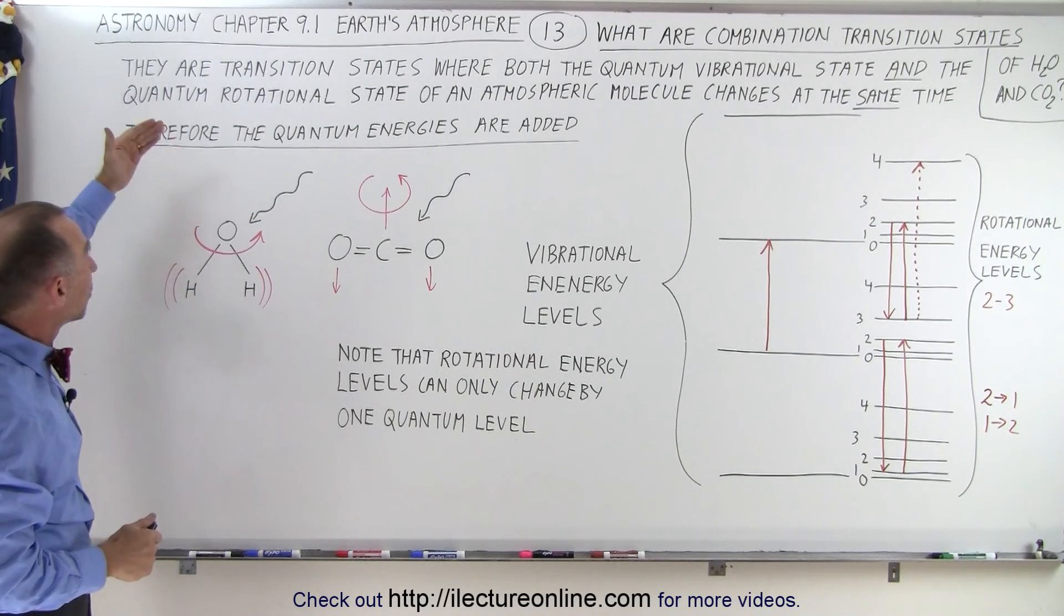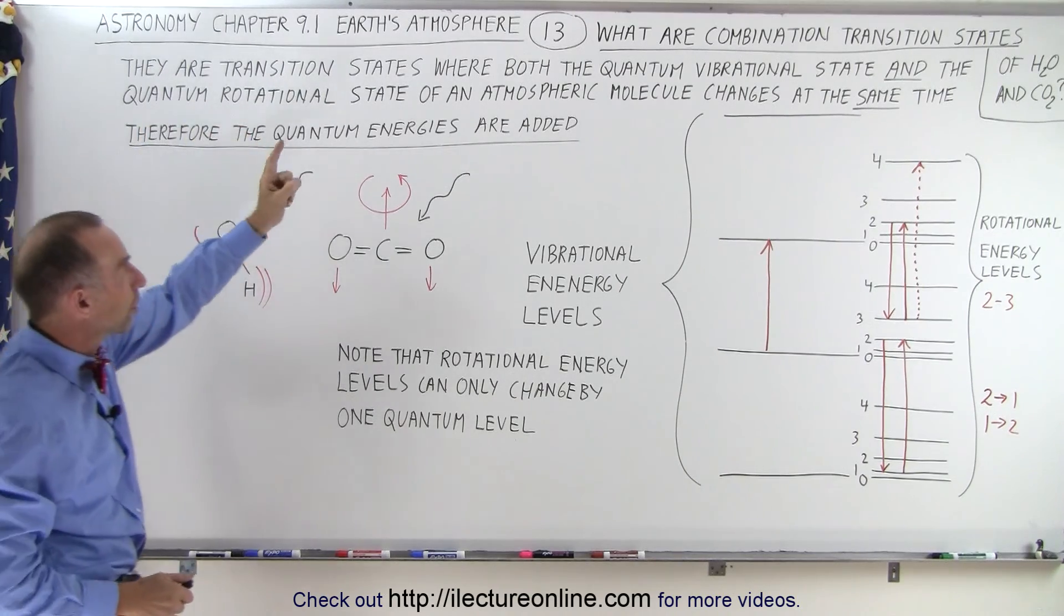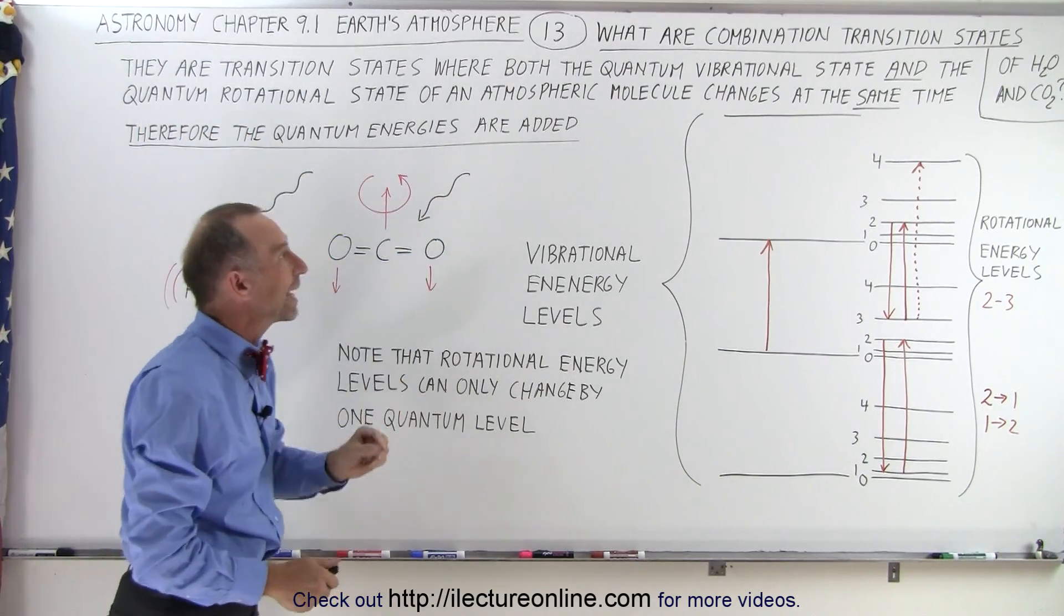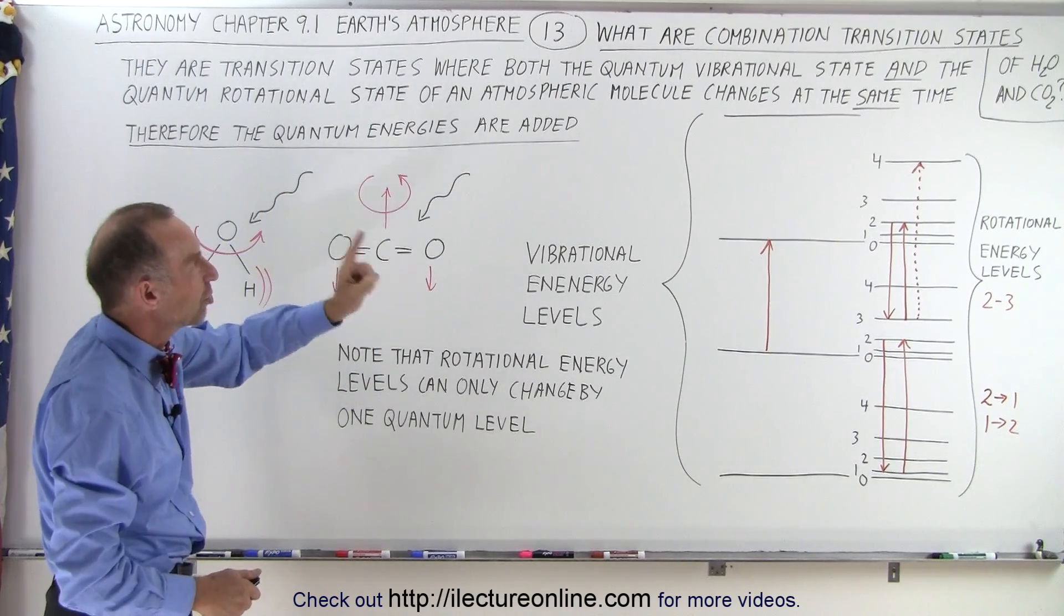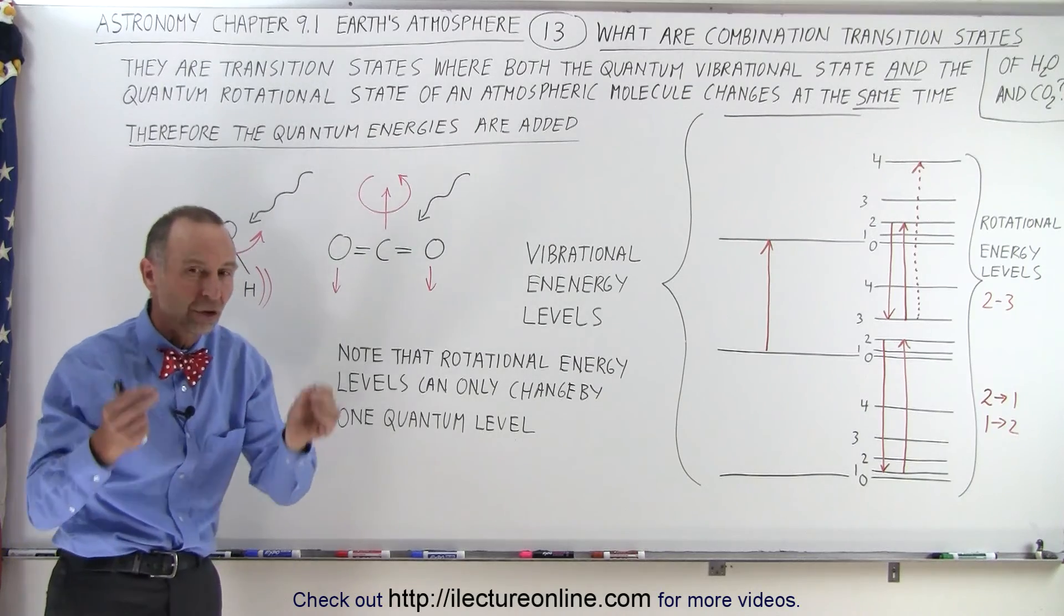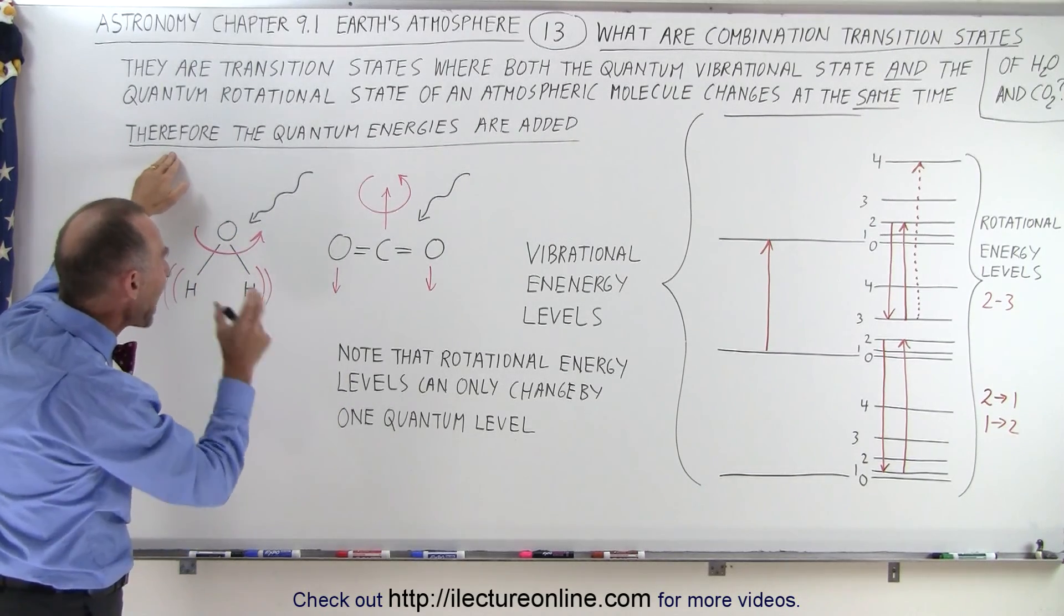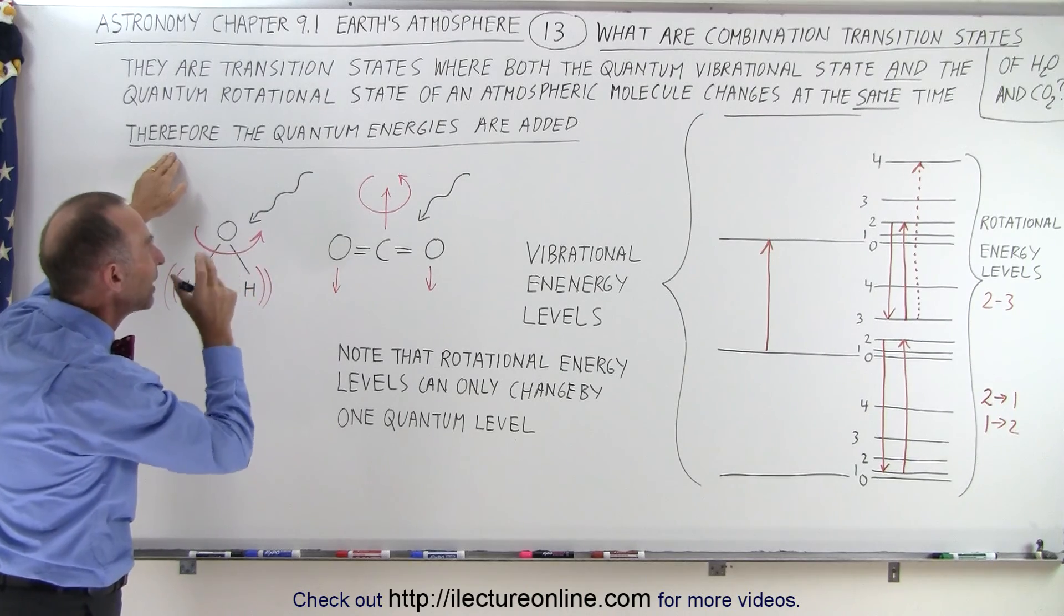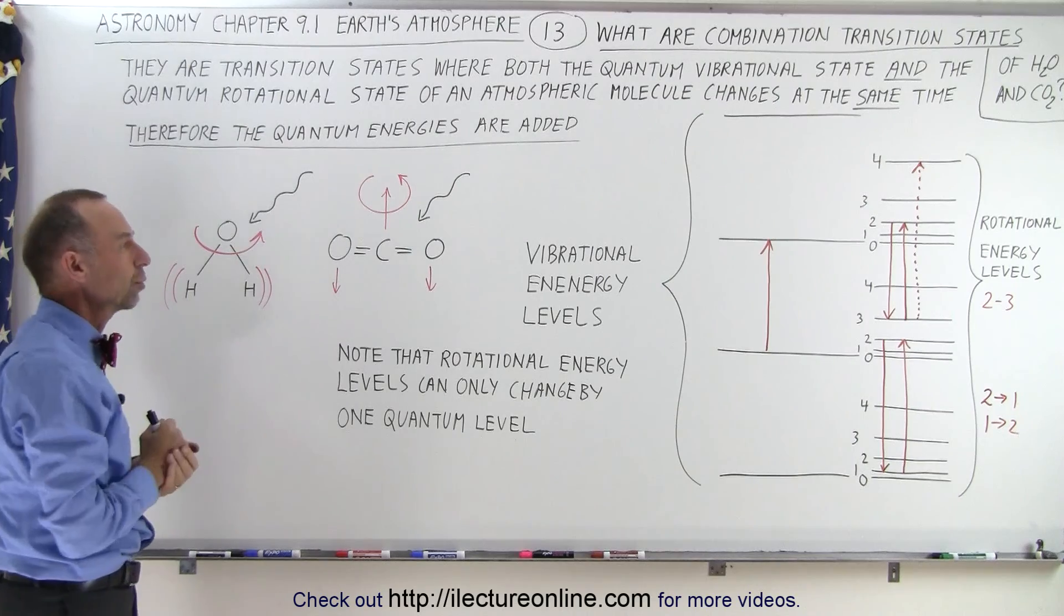So by definition, when we talk about combination transition states, there are transition states where both the quantum vibrational state and the quantum rotational state of an atmospheric molecule changes at the same time, and remember these are quantum changes, and therefore we need to add the quantum energies together, both from the vibrational quantum state and the rotational quantum state.